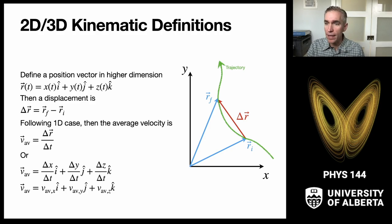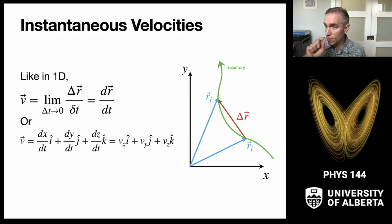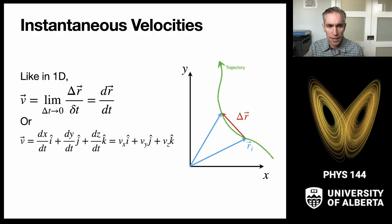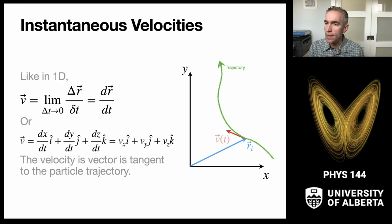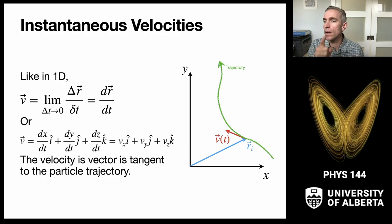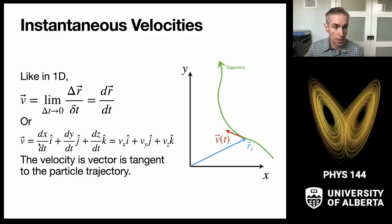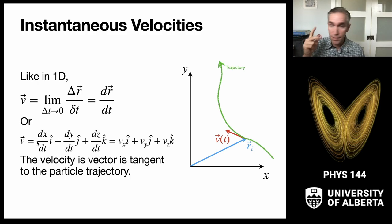Then we can consider the limit as the time interval goes to zero and calculate the instantaneous velocity. Graphically, our final position gets closer and closer to our initial position, and we come up with a velocity vector in the limit that is tangent to the particle trajectory — pointing along the trajectory at any given time. So the velocity vector is just the component-wise time derivatives of the x, y, and z components, operating independently. A 3D problem is just three one-dimensional problems.